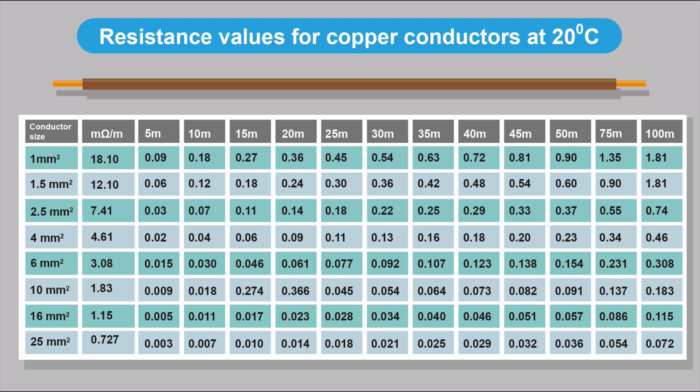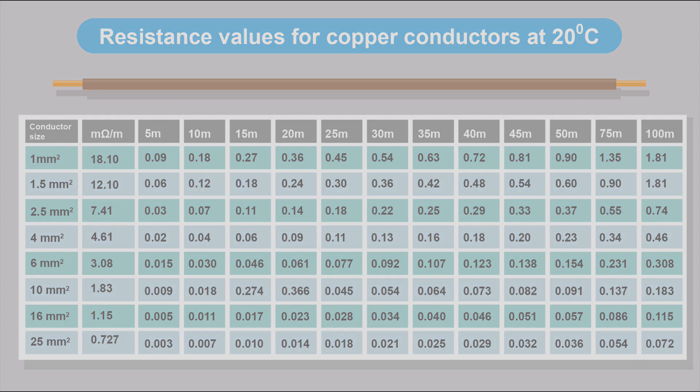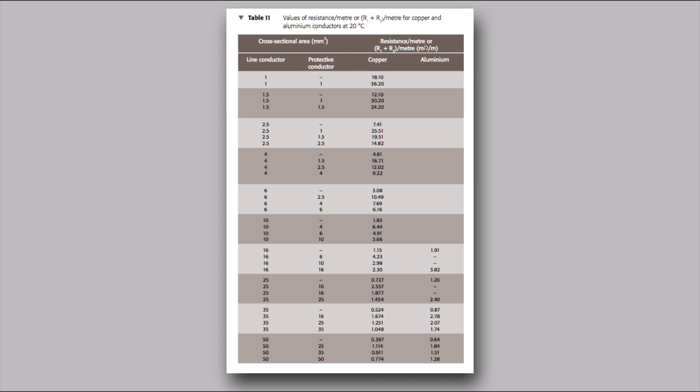So if you've got 35 metres of 6mm cable, you should be expecting a reading of 0.107 ohms. If you've got 50 metres of 16mm, you'll be getting a reading of 0.057 ohms. And you can find all these values in Appendix I in the on-site guide.